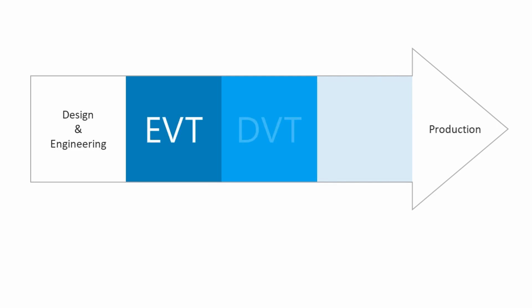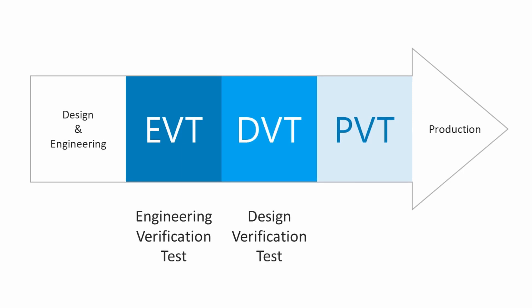This verification is done in three phases from design engineering to mass production. They are called EVT, DVT, and PVT. But what do they actually mean? EVT: Engineering Verification Test. DVT: Design Verification Test. PVT: Production Verification Test.